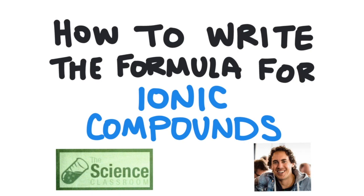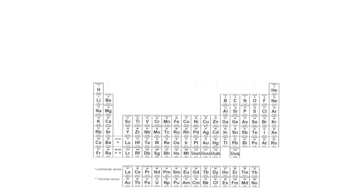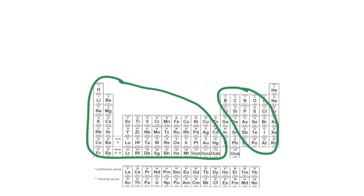In this video we're going to talk about how to write a formula for an ionic compound. An ionic compound forms when metals, which are these elements over here on the left, are going to combine with non-metals, which are these elements here on the right, to form a compound.